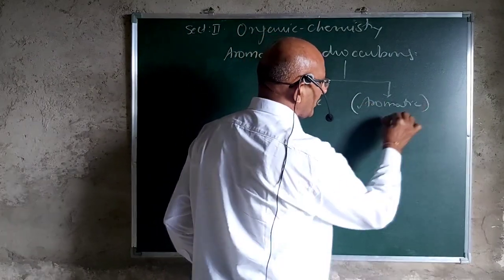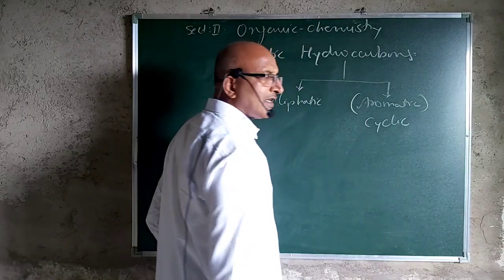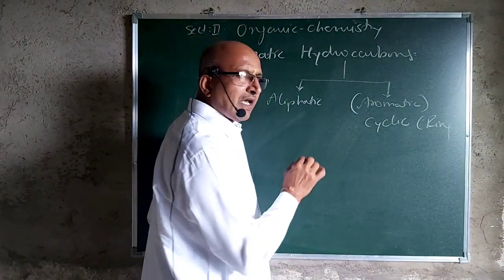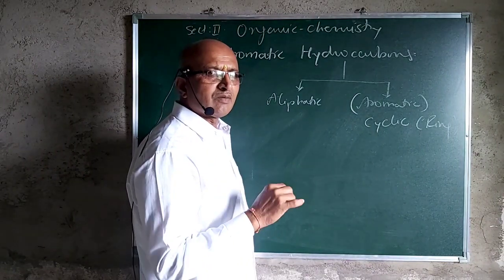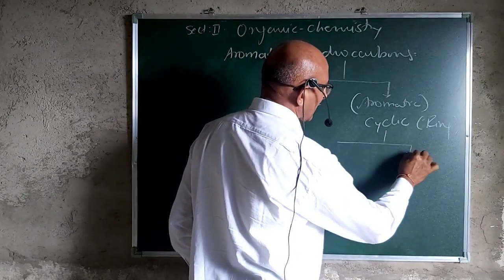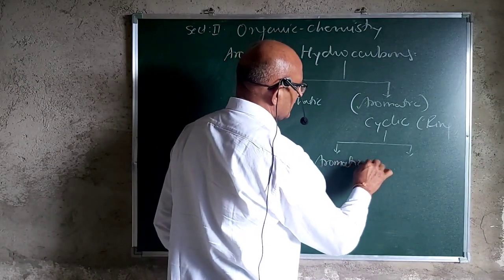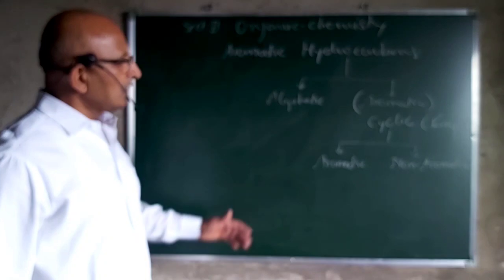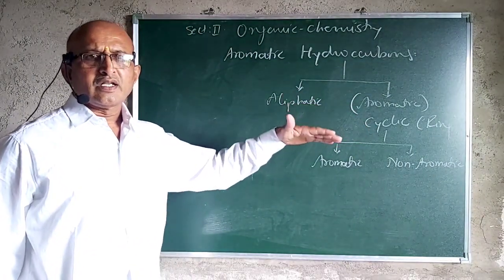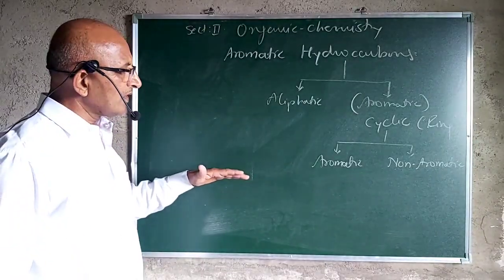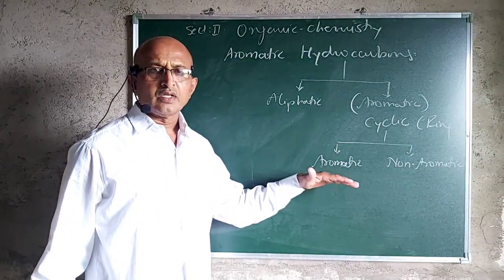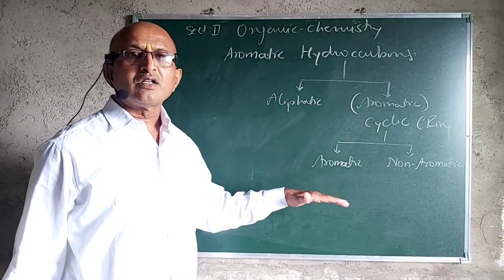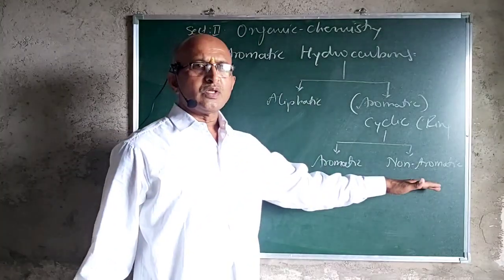So here, instead of saying aromatic, if we say cyclic — that is the ring compound — it is formed by using any one type of atom. In organic chemistry, the atom used in cyclic compounds is carbon. These cyclic compounds can be classified as aromatic and non-aromatic. The ring compounds formed by using only one type of atom — carbon — which obey Hückel's rule are termed aromatic, and those which do not obey Hückel's rule are termed non-aromatic.